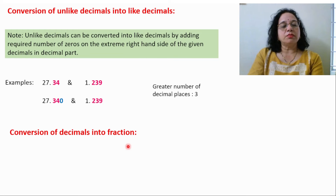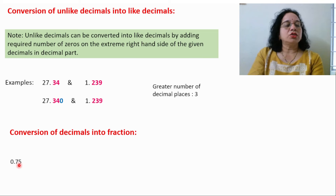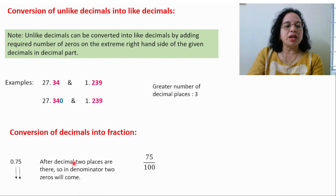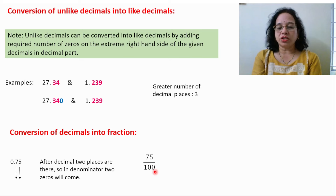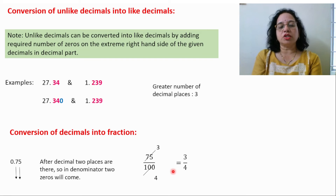Conversion of decimals into fractions. Given a decimal, after the decimal there are two digits, which means two zeros will come in the denominator. Write 1 in the denominator and add two zeros. The numerator stays as 75. Convert the fraction into simplest form by dividing both numbers by 25. Your final answer is 3 upon 4.